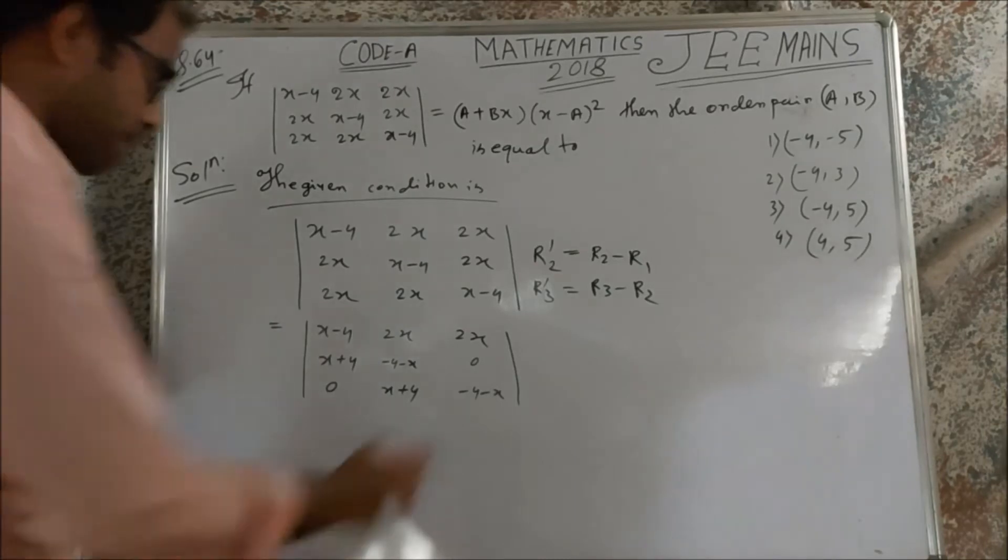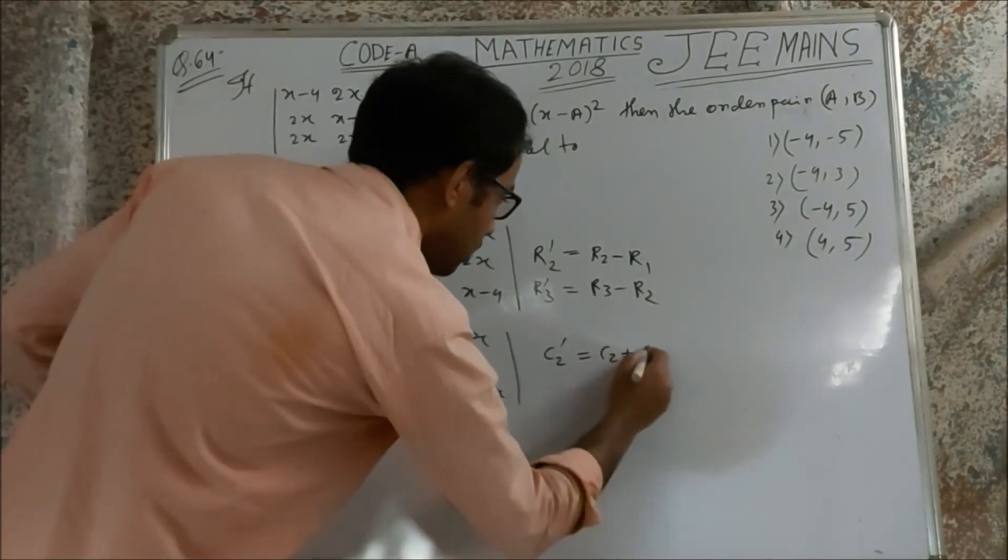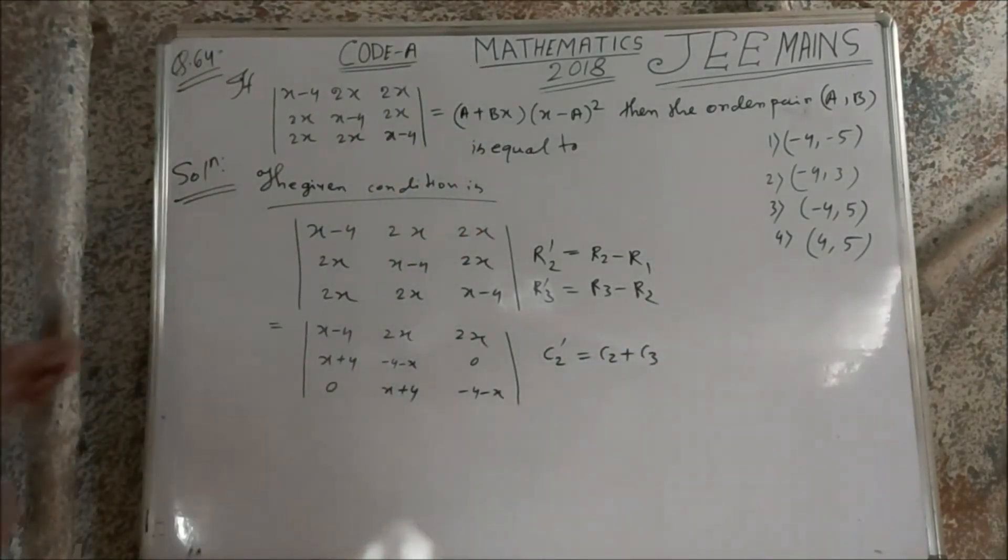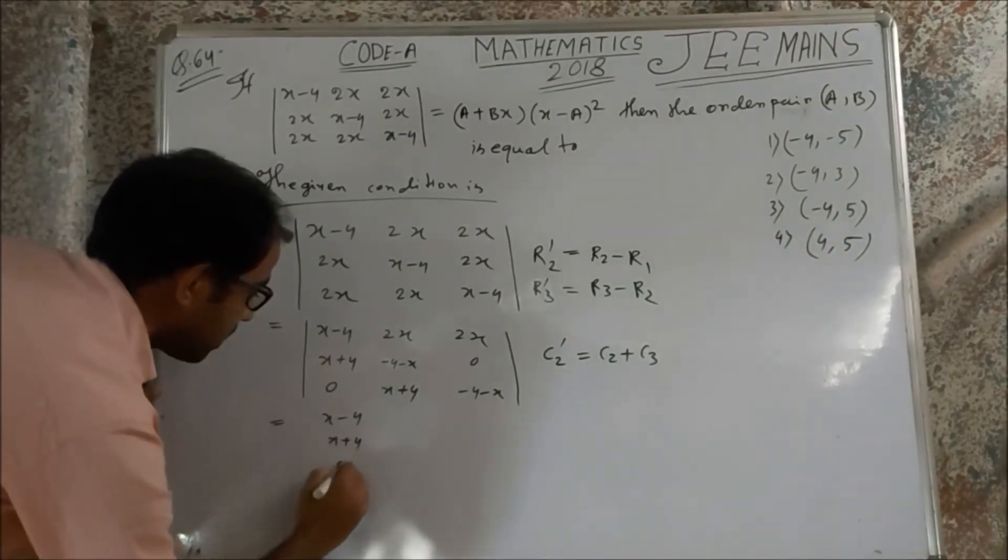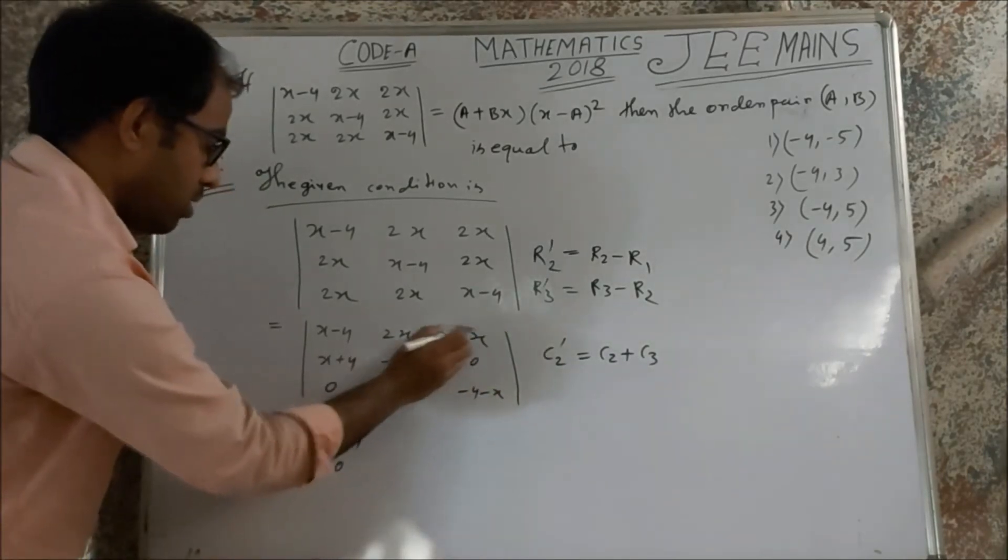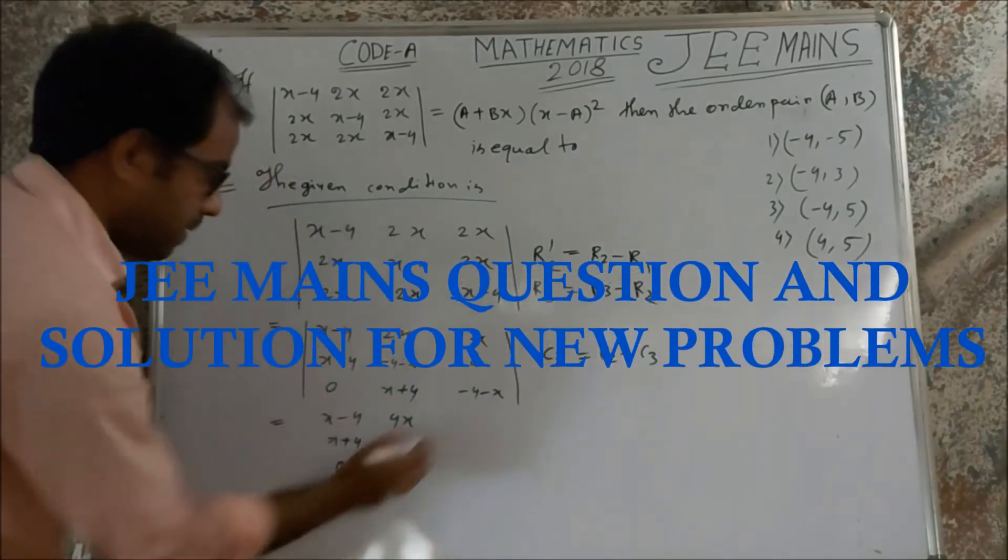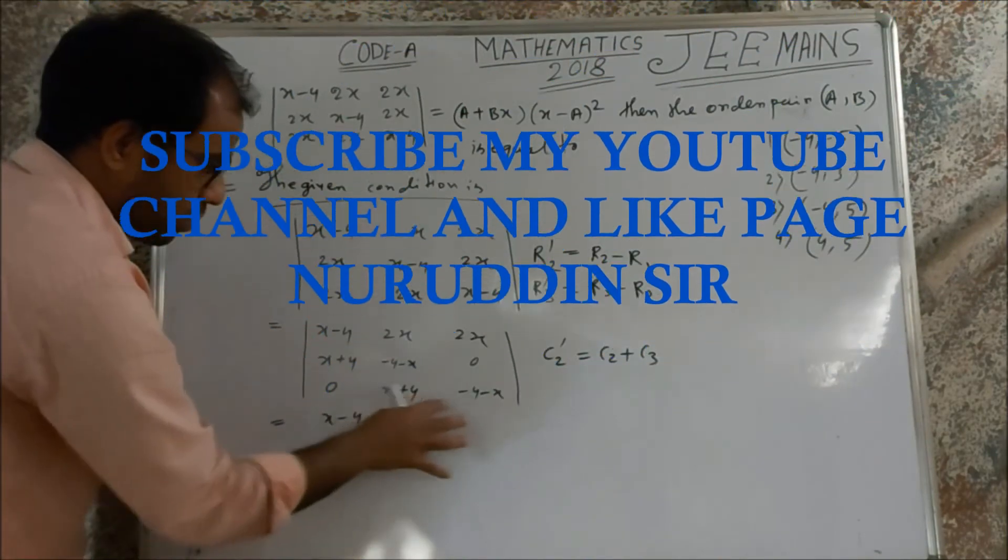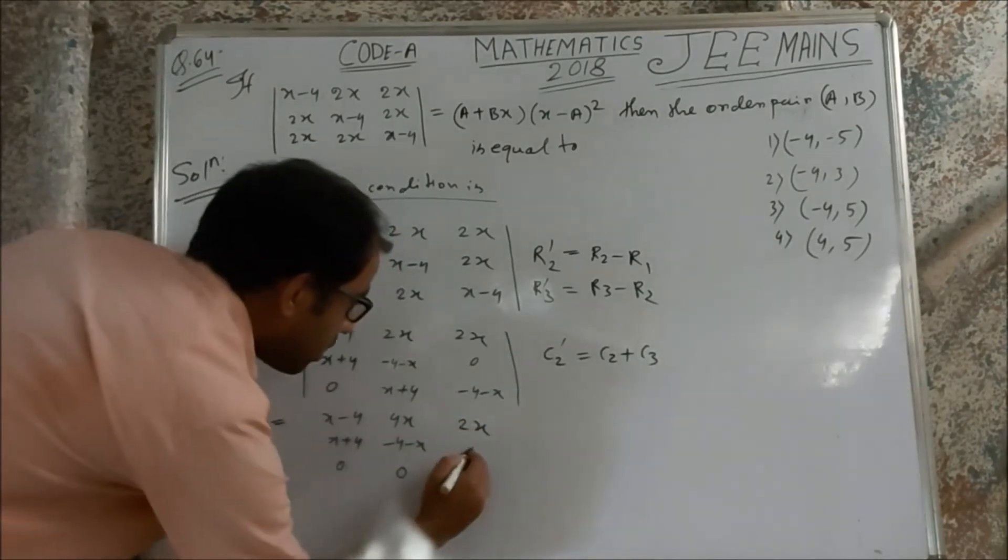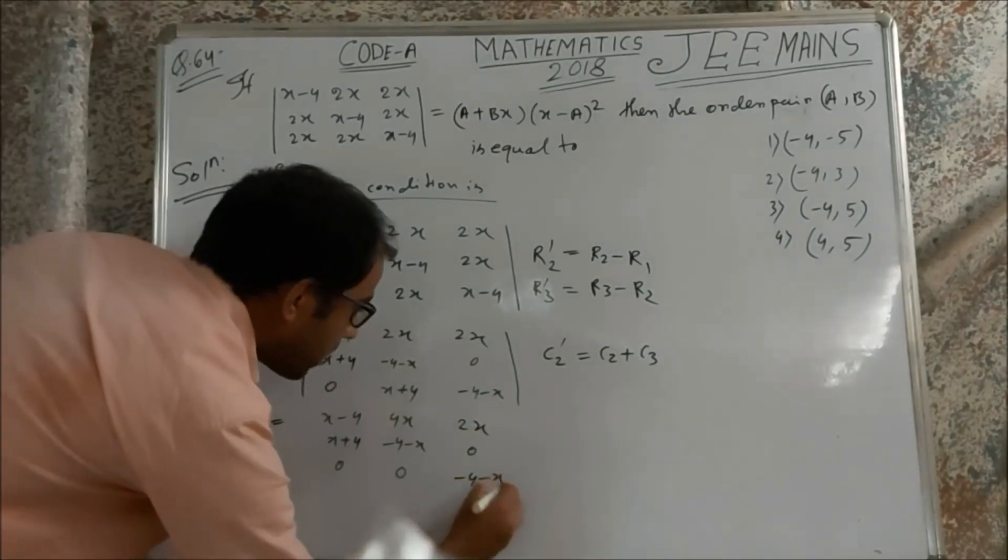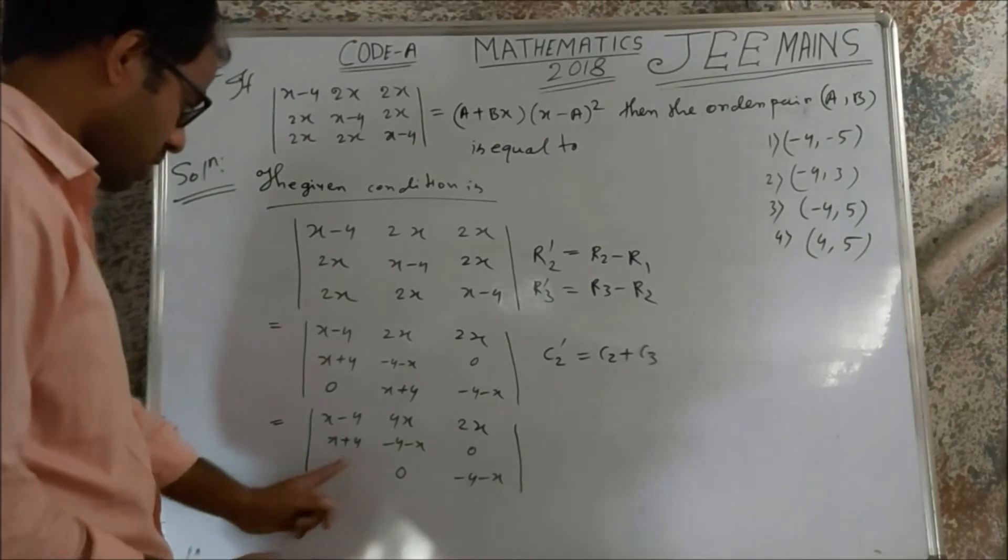Now we add C2 column. That means C2 plus C3. That means first column unchanged. Second column will change. This plus this segment is 4x. This and this part minus plus x minus x plus 4 minus 4 segment is equal to 0. Now we have 2x minus 4 minus x.